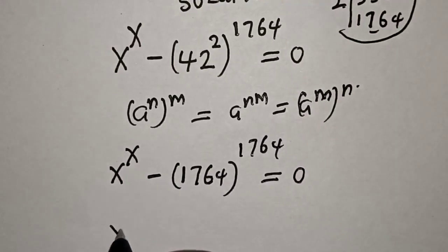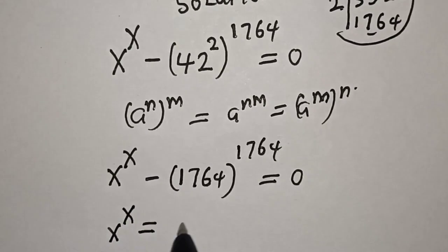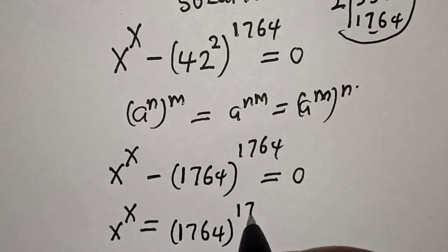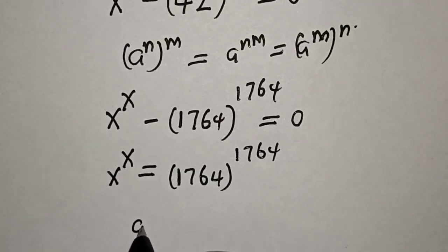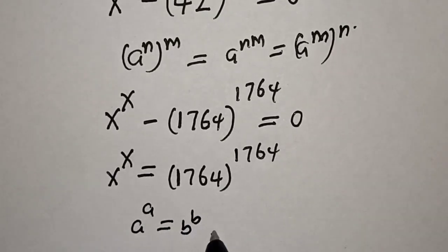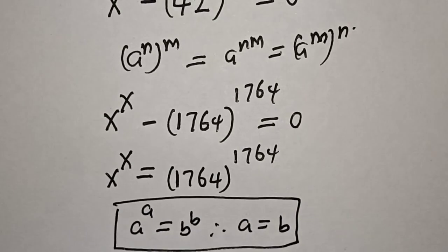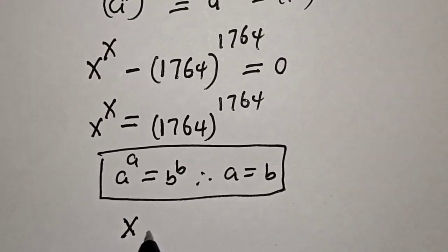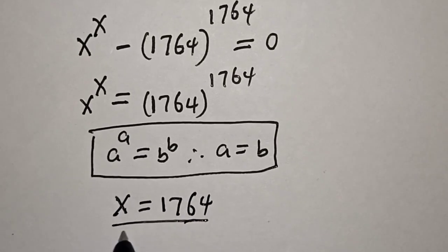Now this gives us s raised to power s is equal to 1764 raised to power 1764, taking the other term to the other side. If a raised to power a equals b raised to power b, therefore a is equal to b. Then from this equation, s is equal to 1764. That is our final answer.